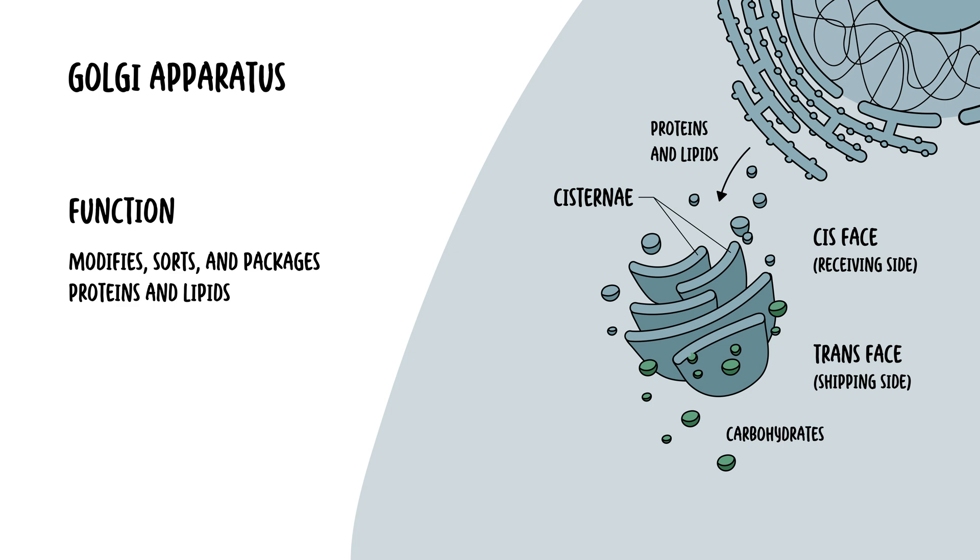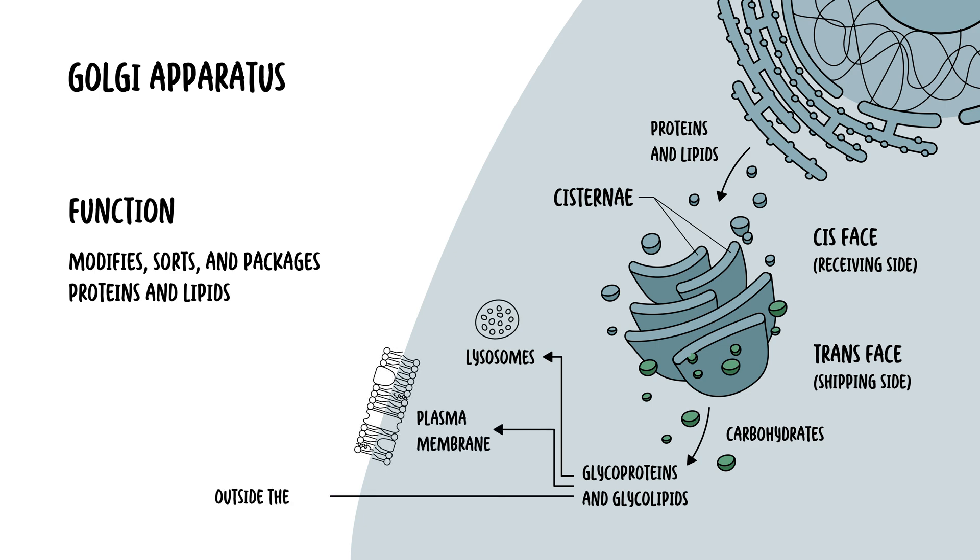Within the Golgi apparatus, it adds carbohydrates to proteins, glycosylation, as well as carbohydrates to lipids, glycolipids, and then sorts them for transport to their final destination. And this can be the lysosome, the plasma membrane, or transportation to be secreted outside the cell. And this would be the case if a cell was to release hormones or some sort of molecule or cytokine.